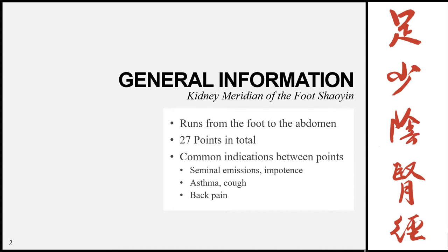The kidney is responsible for development and reproduction, so we can use points on this meridian to treat disorders of the reproductive system — things like seminal emission, impotence, and infertility. Secondly, the kidney assists in breathing and is responsible for receiving qi from the air we breathe, so it can be used for disorders of breathing such as asthma and cough — specifically those caused by kidney disorder, not those related to the lungs. Thirdly, it can be used for back pain, as the kidney governs the lower back and knees.